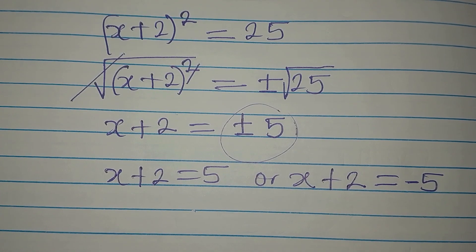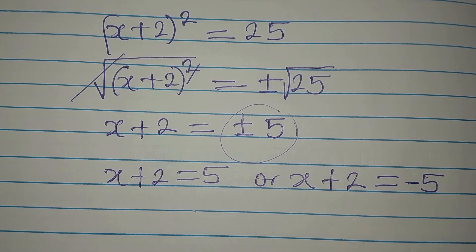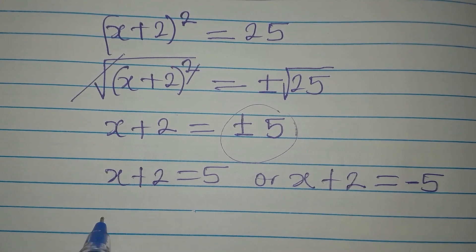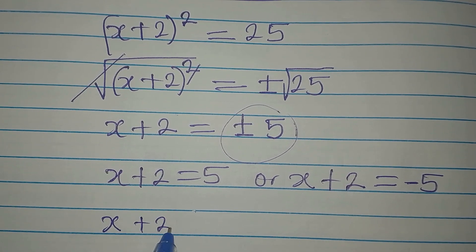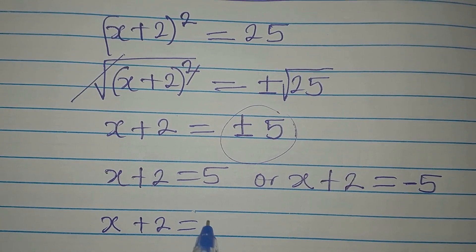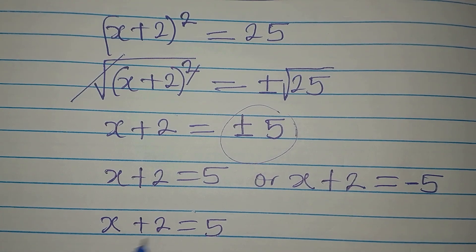So the next thing is to solve them separately. I'm going to work with this. From here, x plus 2 equals 5. So let's take 2 to the other side.